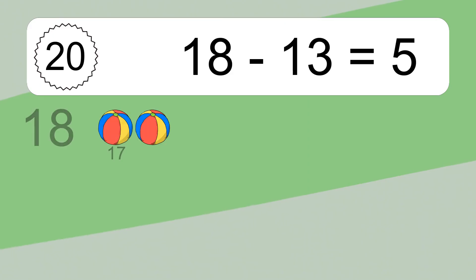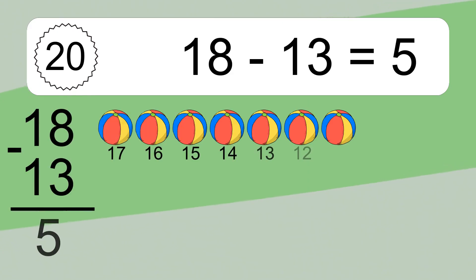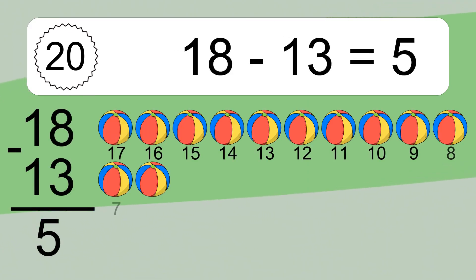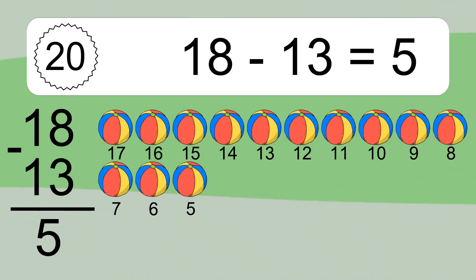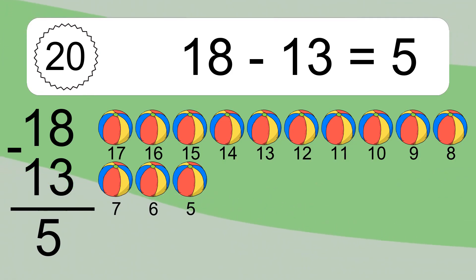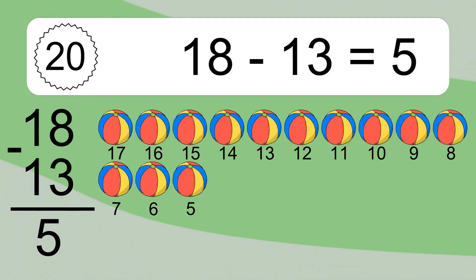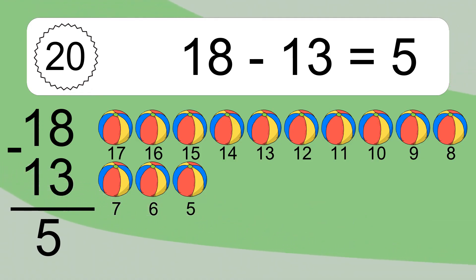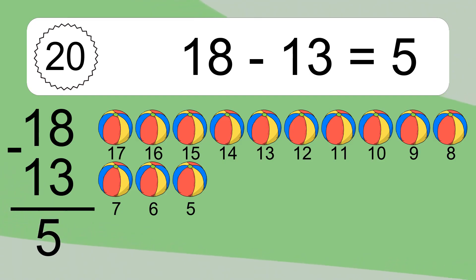18 minus 13 equals what? 18 minus 13 equals 5. Let's count it: 17, 16, 15, 14, 13, 12, 11, 10, 9, 8, 7, 6, 5.